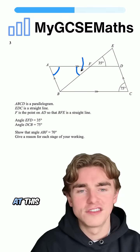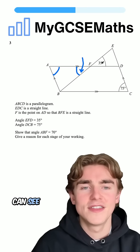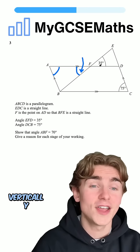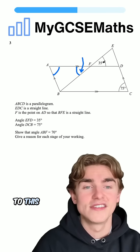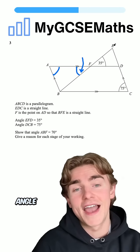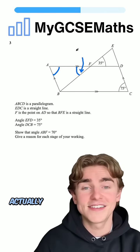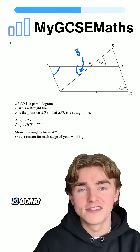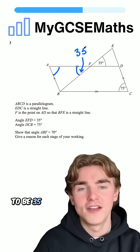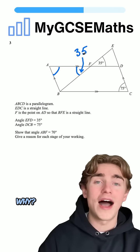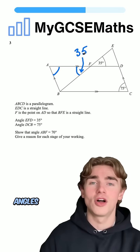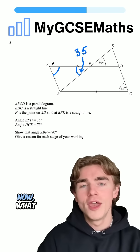First off, looking at this one, we can see that it is vertically opposite to angle EFD. So we can say that this one is going to be 35 degrees. Why? Because vertically opposite angles are equal.